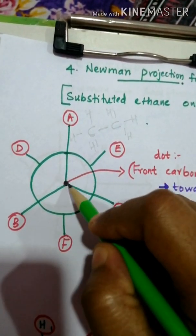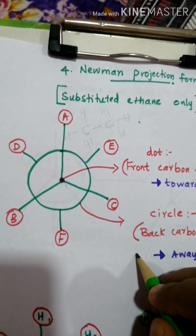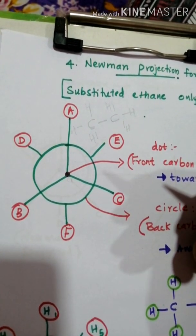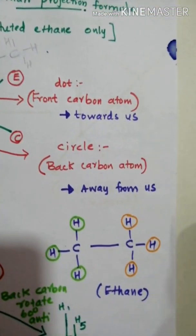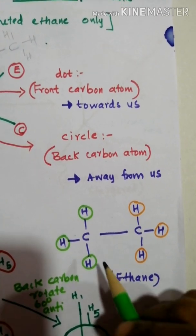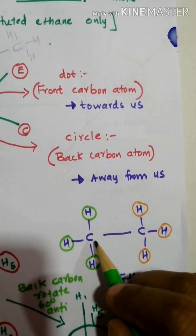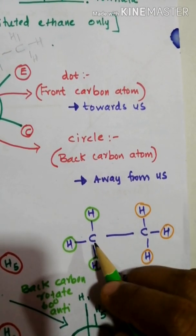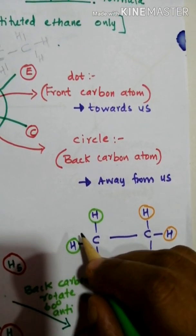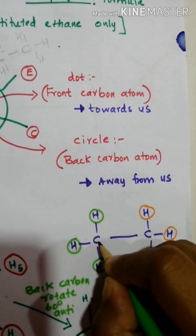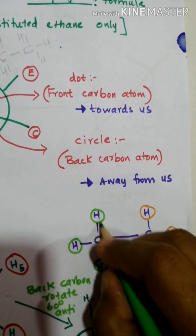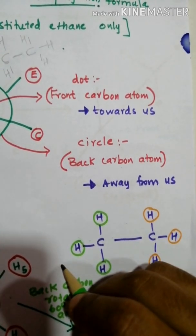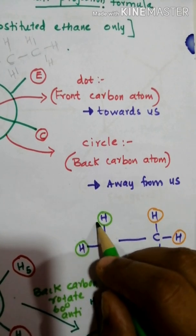Considering a general ethane formula — CH₃–CH₃ — there are three hydrogens on the front carbon and three on the back carbon. The front carbon is attached with four bonds. In the actual substituted case, the hydrogen is replaced with another group, which is why we call it substituted ethane.